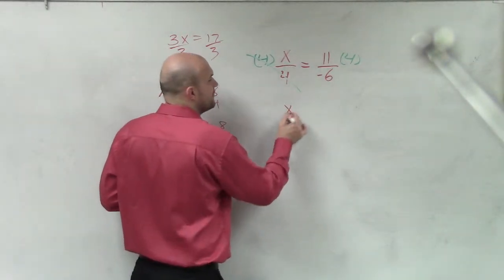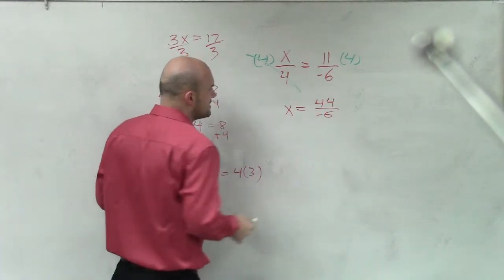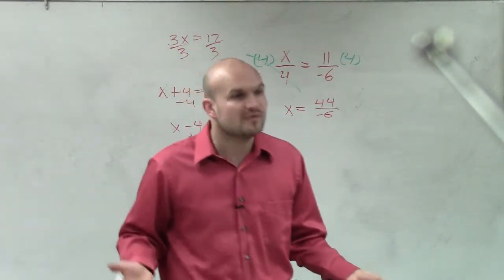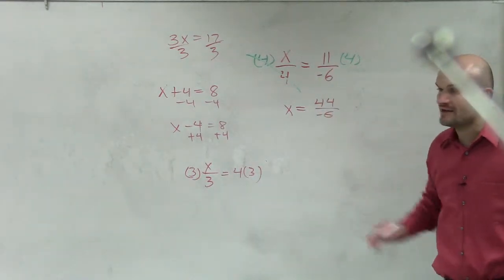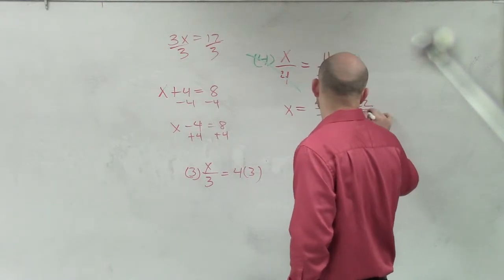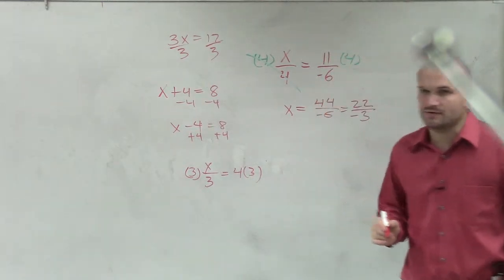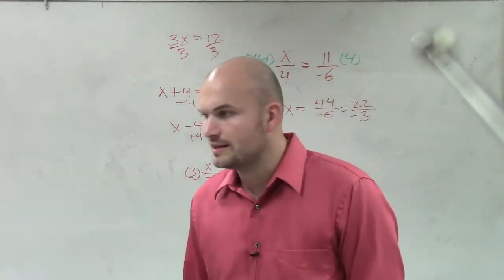But yes, we will get to that. So therefore, x equals 44 over negative 6. Now, can I go ahead and simplify that? We want to talk about always trying to simplify your fractions. So if I go ahead and simplify that, I get 22 over negative 3. Divided the top and bottom by 2, and that would be my final answer.